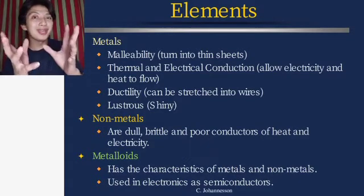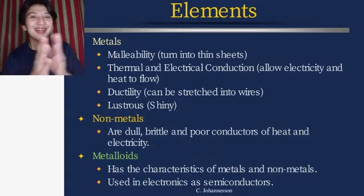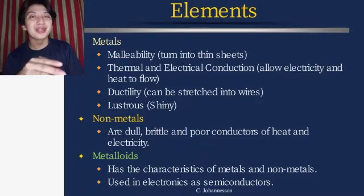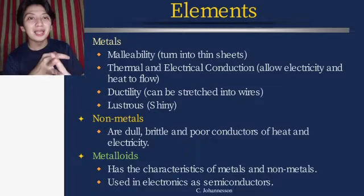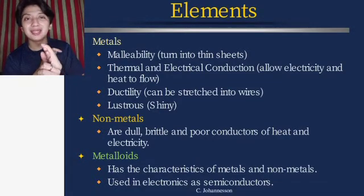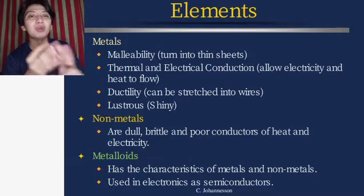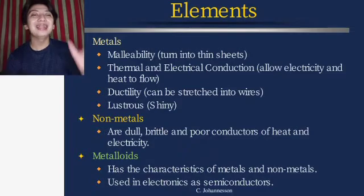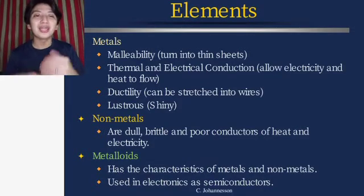Non-metals are considered dull — not shiny — and brittle, meaning they can be easily broken. They are poor conductors of heat and electricity. Metalloids have characteristics of both metals and non-metals and are used in electronics as semiconductors.